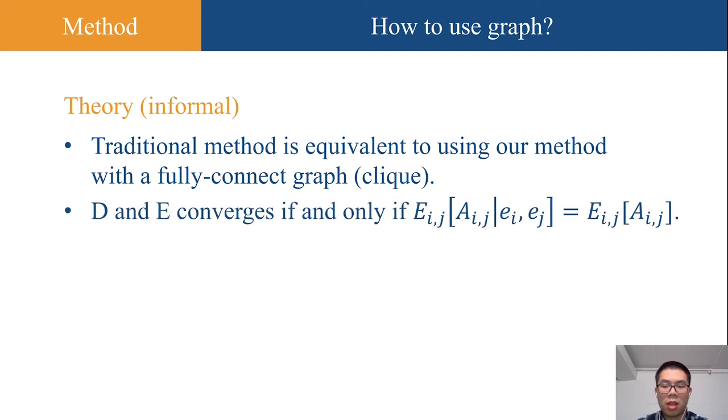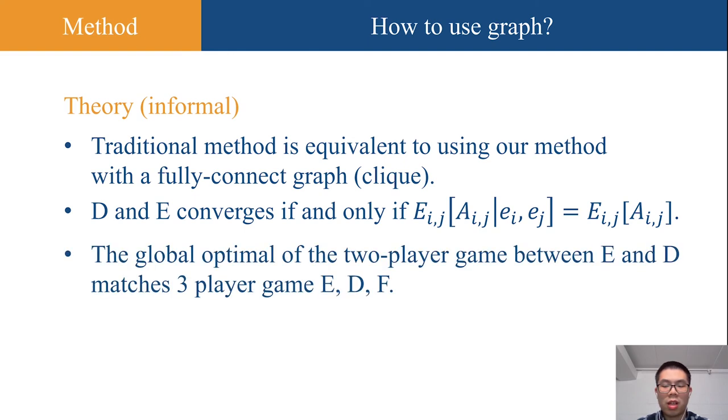Second, D and E converge if and only if this equation holds. Intuitively, this means that when the model converges, the encoder will remove all the information about domain connection. And finally, the global optimal of the two-player game between E and D matches the three-player game EDF.